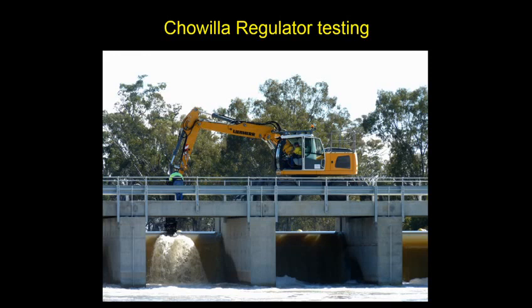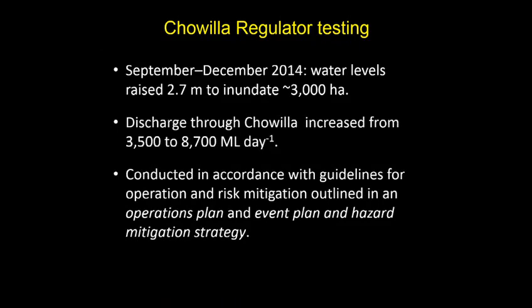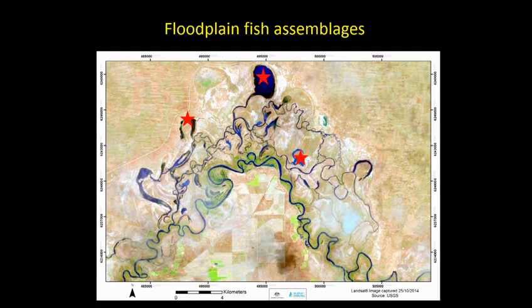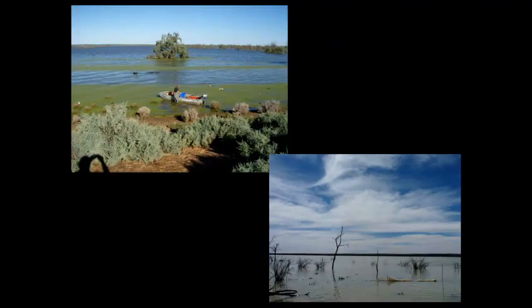The Chowla regulator was constructed and tested in spring 2014. Water levels were raised 2.7 metres behind the regulator over about a three-month period, and discharge was increased through Chowla Creek to try and maintain flowing water habitats for native fish. This gave us an opportunity to look at fish assemblages in floodplain habitats that were inundated — and importantly, we had data from those same habitats during the 2010–11 floods. We looked at three sites — Wurta Wur, Limbra, and Punkah Horseshoe — using the same gear: fyke nets and multi-panel gill nets.